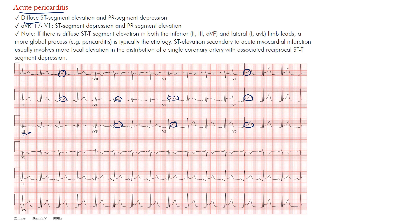You also have concomitant PR depression. If you look at our complexes — this is your P wave, this is your QRS complex, in this case an RS complex, then a T wave. We have our PR interval here, and our ST segment runs from the J point to the beginning of the T wave. We also have a PR segment, which is after the P wave up until the QRS complex.